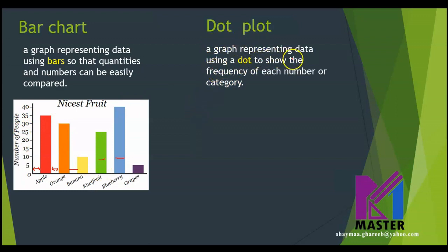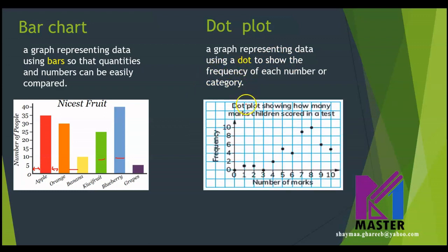Now, let's talk about the dot plot. The dot plot is a graph representing data using a dot to show the frequency of each number or category. As you can see, look at the scale and how it goes — here it goes by two. This one shows the number of marks. Look at the title of the graph: 'The plot showing how many marks children scored in a test.' These numbers represent the number of marks — for example, how many students got one: we have only one student. How many students got two? We have one student who got two in the test, and so on.